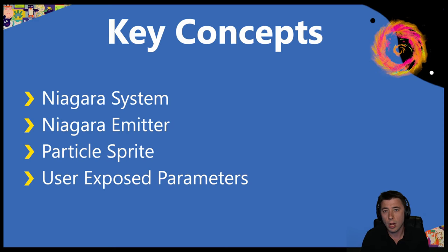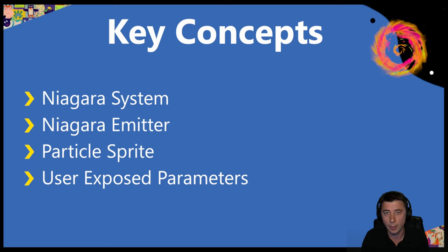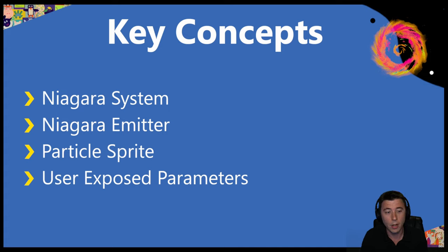We have a few new concepts this episode, mostly revolving around the basics of Niagara. The one somewhat advanced concept is user-exposed parameters — variables we pass into the Niagara system — and that's going to drive exactly how many particles spawn when the player either jumps into the water or a footstep lands in the water. Let's get to it.